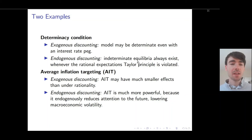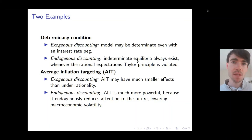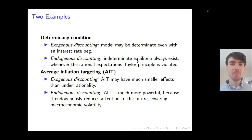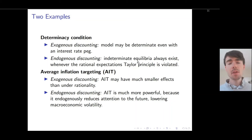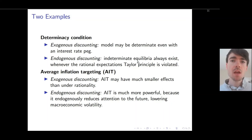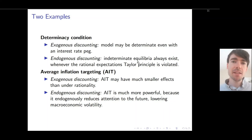I also analyse the effectiveness of different policy regimes such as average inflation targeting. Previous studies have shown that the power of average inflation targeting is much reduced under exogenous discounting. But I show that when discounting is endogenised, average inflation targeting is much more effective — because it endogenously reduces the extent to which agents pay attention to the future, thereby lowering the degree of macroeconomic volatility.